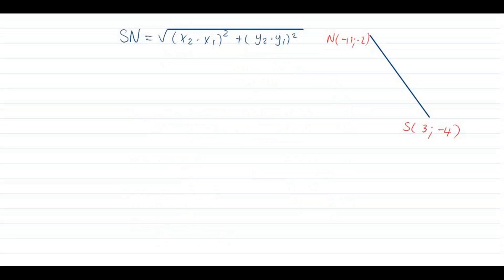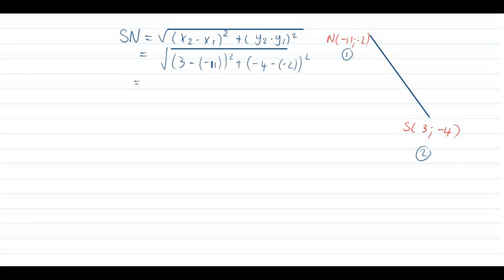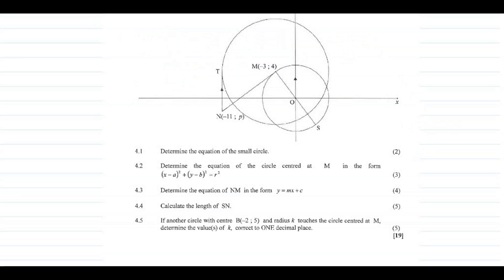Using the distance formula: SN = √[(x₂ − x₁)² + (y₂ − y₁)²], with S(3, −4) as point 1 and N(−11, −2) as point 2. Substituting these values into the calculator gives SN = 10√2 ≈ 14.14 units.